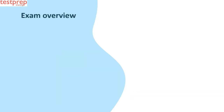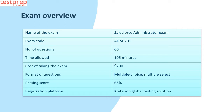Now we will discuss the exam overview. The Salesforce Administrator exam consists of 60 questions in multiple-select and multiple-choice format. There are five unscored questions included for improvement purposes. 105 minutes are allotted to complete the exam, the cost is $200, and the passing score is 65%.